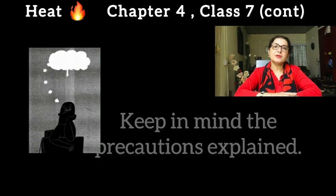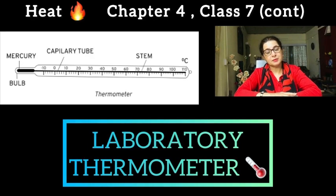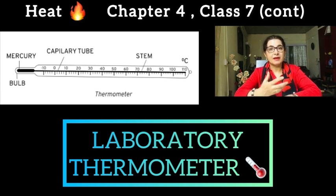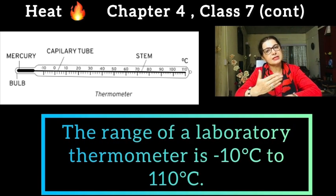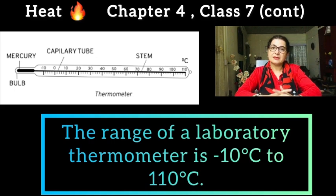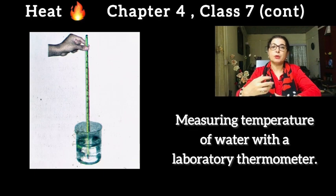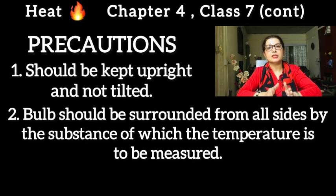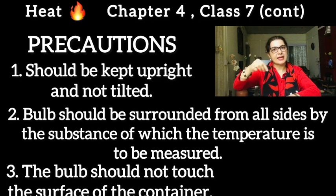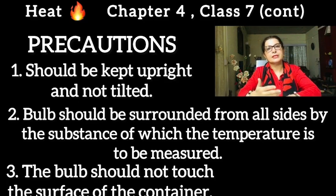The next type is the laboratory thermometer. As the name indicates, it is used in labs or laboratories. In laboratories, objects and liquids — including acids and chemicals — can have very high or low temperatures. So the temperature range of the laboratory thermometer is much wider: from minus 10 degrees centigrade to 110 degrees centigrade. When taking readings, you need to immerse the thermometer in the chemical or liquid, and be careful that it does not touch the sides or the base of the beaker.